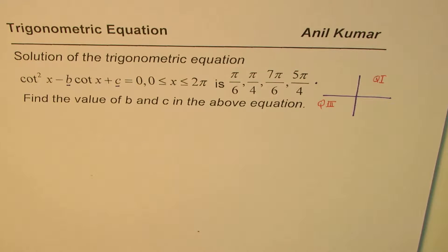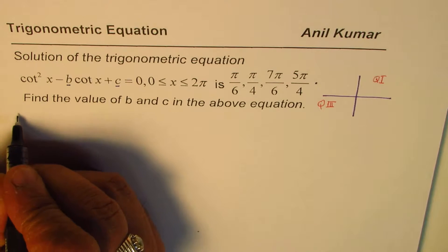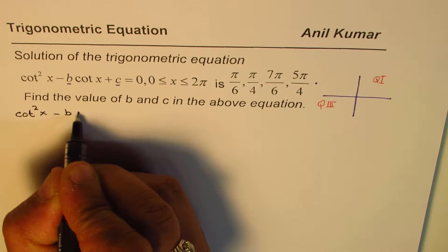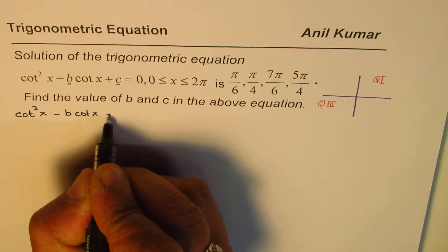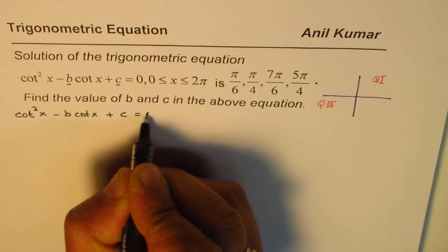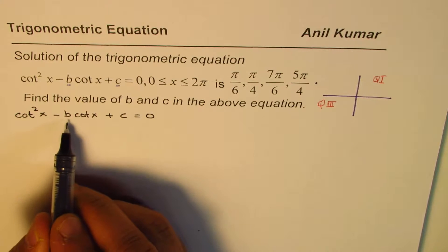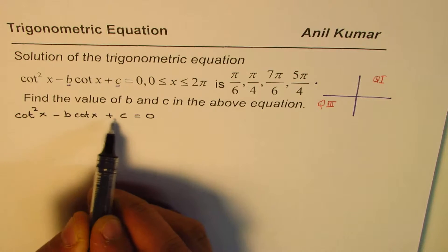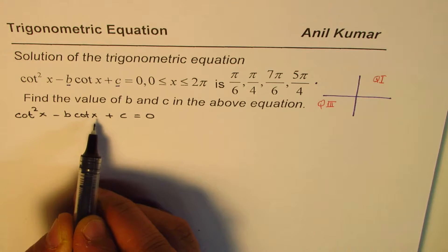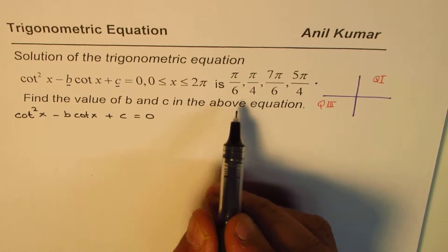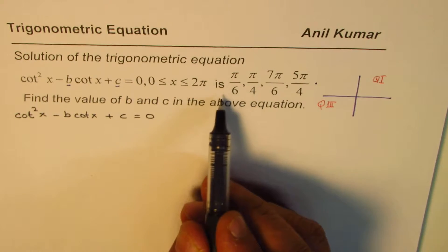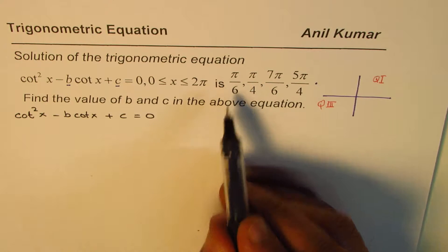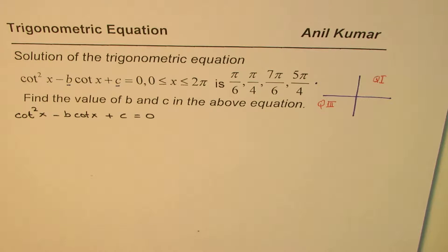The equation given to us is cot squared x minus b cot x plus c equals 0. It has two unknowns, b and c. To find two unknowns, we need two equations. So let us pick two equations from the four solutions given to us. Let us consider π/4 and π/6.